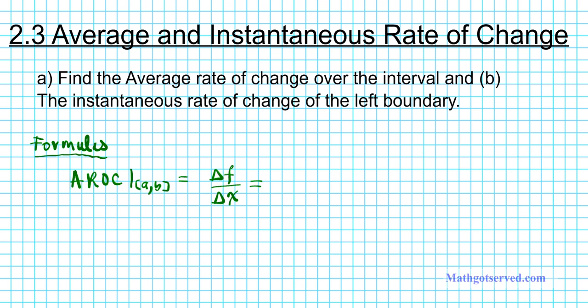It can be calculated by computing f of b minus f of a divided by b minus a. This is an advanced method of writing your typical slope formula, y2 minus y1 over x2 minus x1, the rise over run.